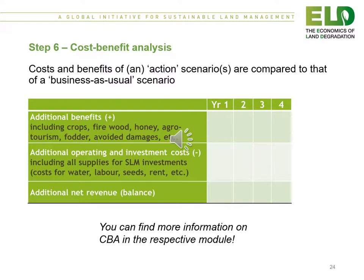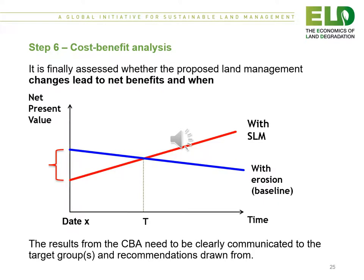The costs and benefits of an action or intervention are compared to that of a business as usual scenario, using the table which lists the additional benefits and the additional operational and investment costs, resulting in a balance or additional net revenue. We can assess whether the proposed land management changes lead to net benefits when, over time, the net present value of the intervention with sustainable land management exceeds the net present value of the business as usual scenario, as shown at point T in the figure.